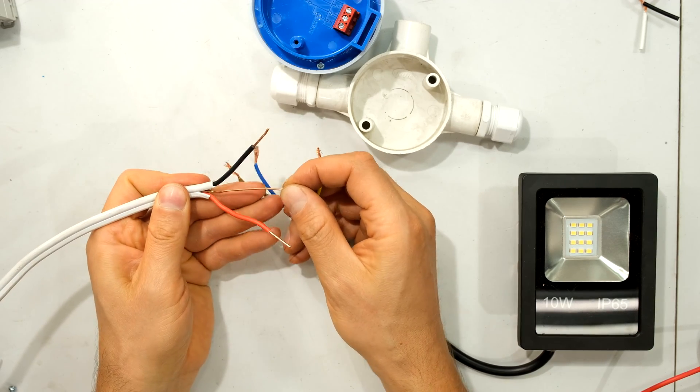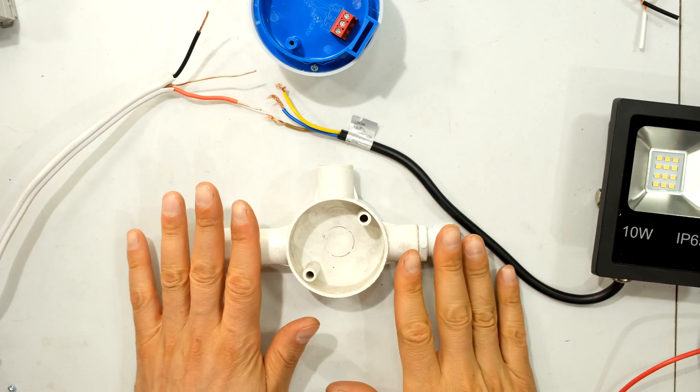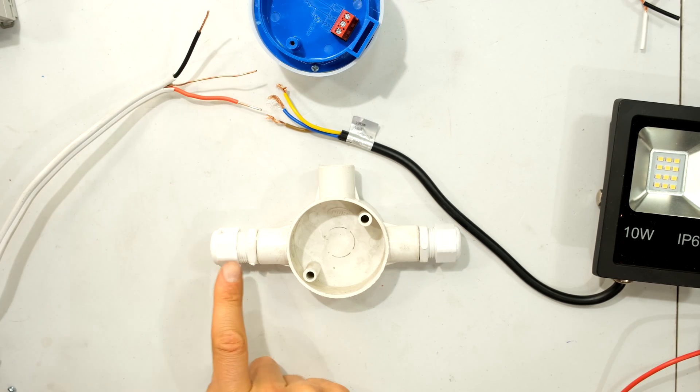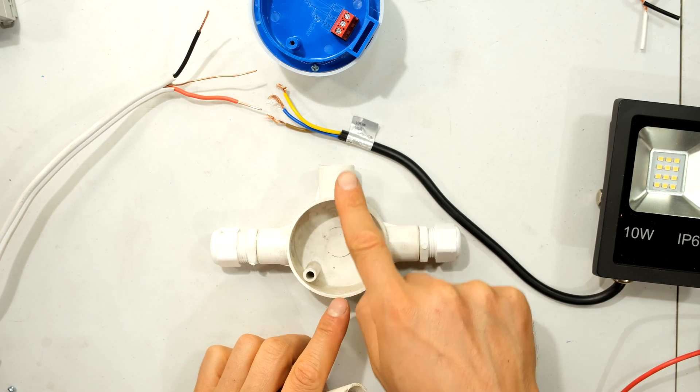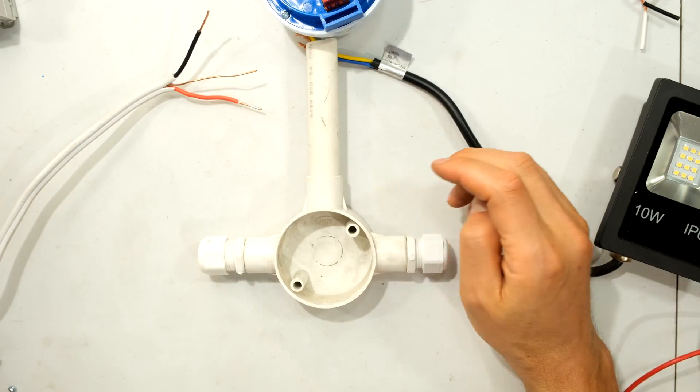And on my supply wire, I have this bare copper, which is also earth. So in this case, I'm going to use a three way coupler. And the reason being is I need my supply coming in, the wires going to the day-night sensor and then the load wires going out.